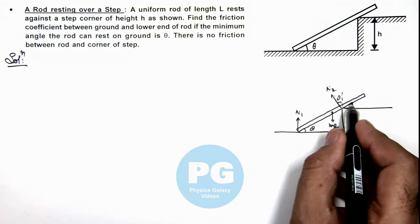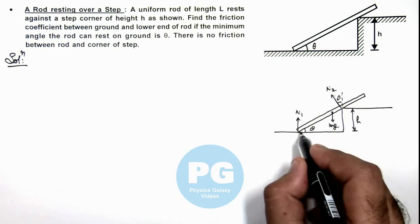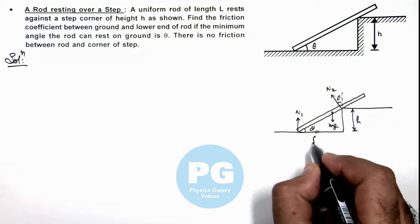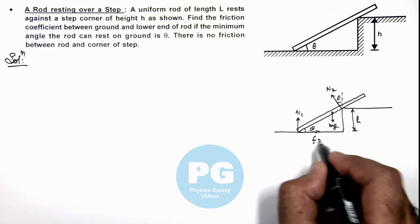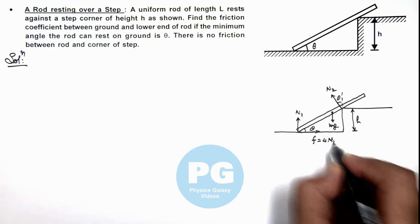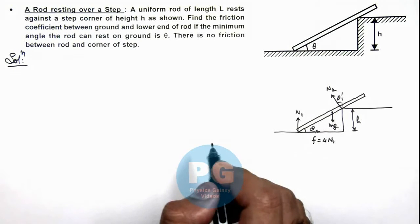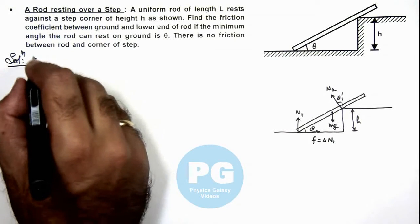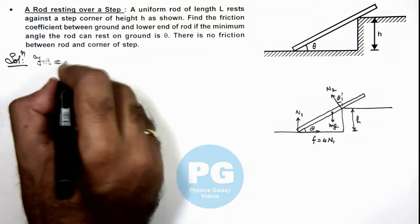Now, as the rod will have a tendency to slip here, friction will prevent the slipping and the limiting value of friction will be mu N1. Now in this situation we can see for equilibrium of rod.